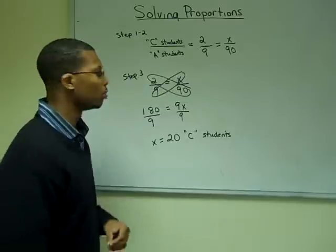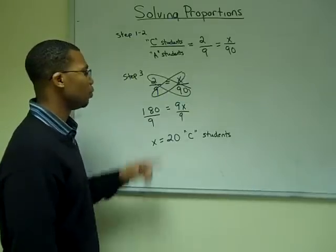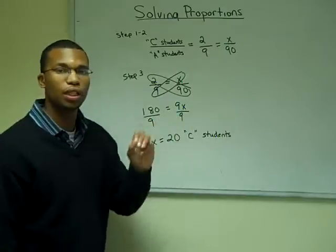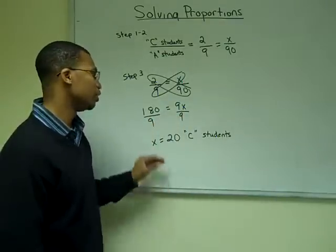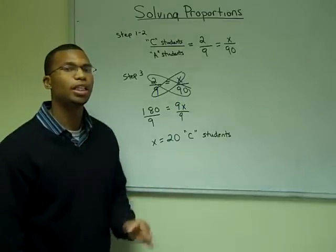In step three, using cross multiplication, we find that 180 is equal to 9x. Dividing both sides by nine gives us that our unknown is 20 C students.